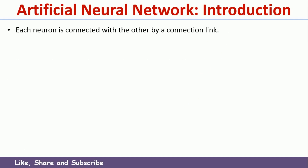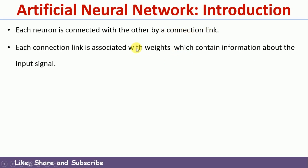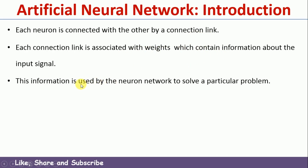Each neuron is connected with other neurons via a connection link. In an Artificial Neural Network, each computation unit is called a neuron, and the network contains multiple neurons connected with one another via links. Each link is associated with a particular weight. Whenever we give a signal to a neuron, that input signal and the weight are transferred to the next neuron through the link. This weight — whatever is assigned to the link or learned by the Artificial Neural Network — is used to solve a particular problem.